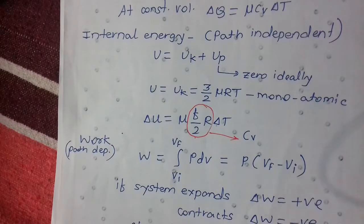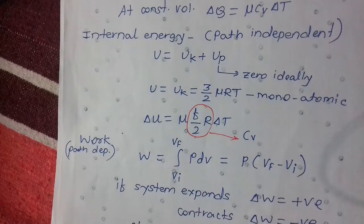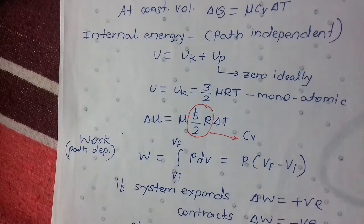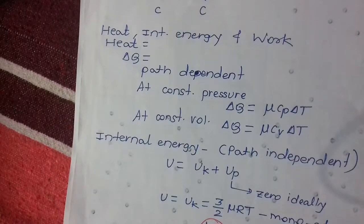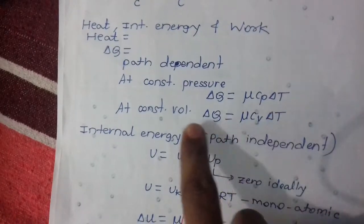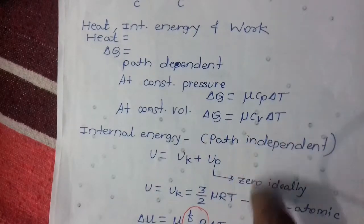ΔQ = ΔU + W. For constant pressure, ΔQ = μCₚΔT, and for constant volume, ΔQ = μCᵥΔT.